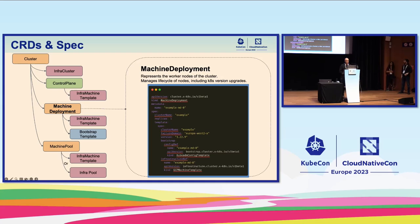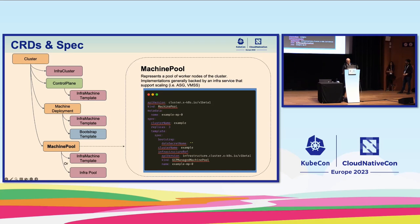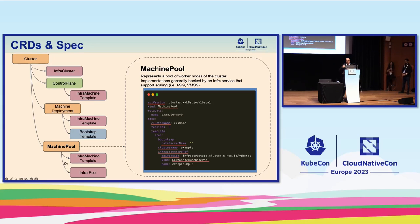Moving on to machine deployments — this represents a set of worker machines with a specific number of replicas. Using a machine deployment results in individual machines being created from a template, similar to a deployment with pods. It manages the lifecycle of machines and orchestrates things like upgrades. The machine pool is very similar but is backed by a specific infrastructure service — think auto-scaling groups in AWS or virtual machine scale sets in Azure. These services may also enable auto-scaling. This feature is still experimental in CAPI and must be explicitly enabled.